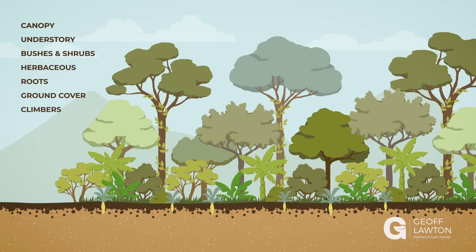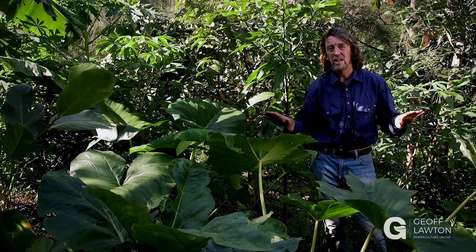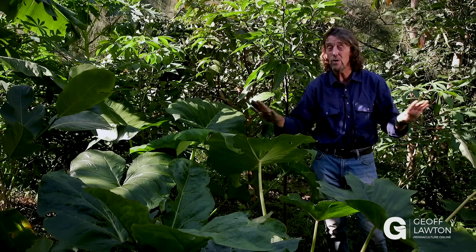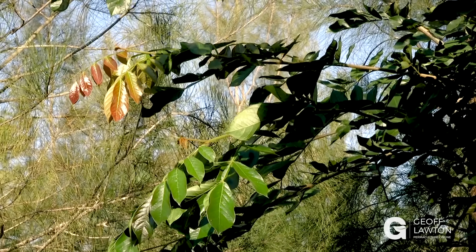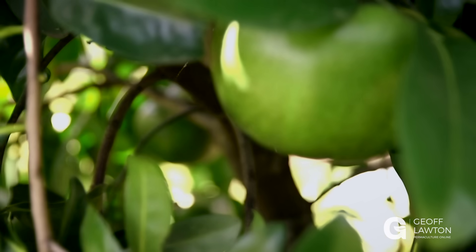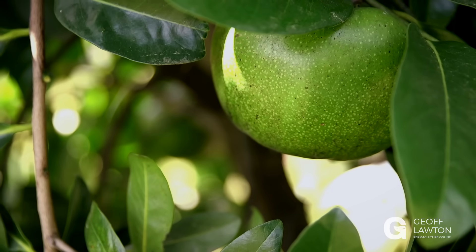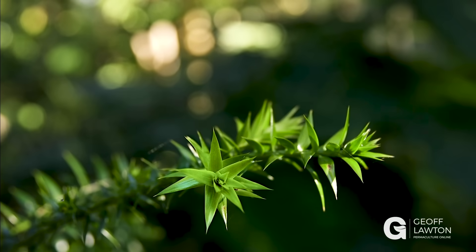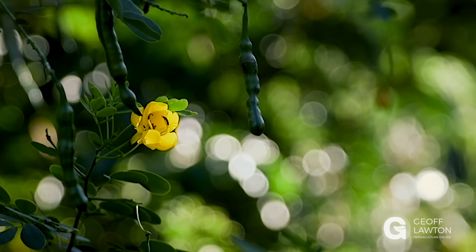All forests have those layers. In the tropics, you can have emergent palms and understory palms, and slight variations in different climates. But you have a basic set of layers that occupy all the space. When we design a food forest, we put that layering system into action to our benefit for production and maintenance through function.